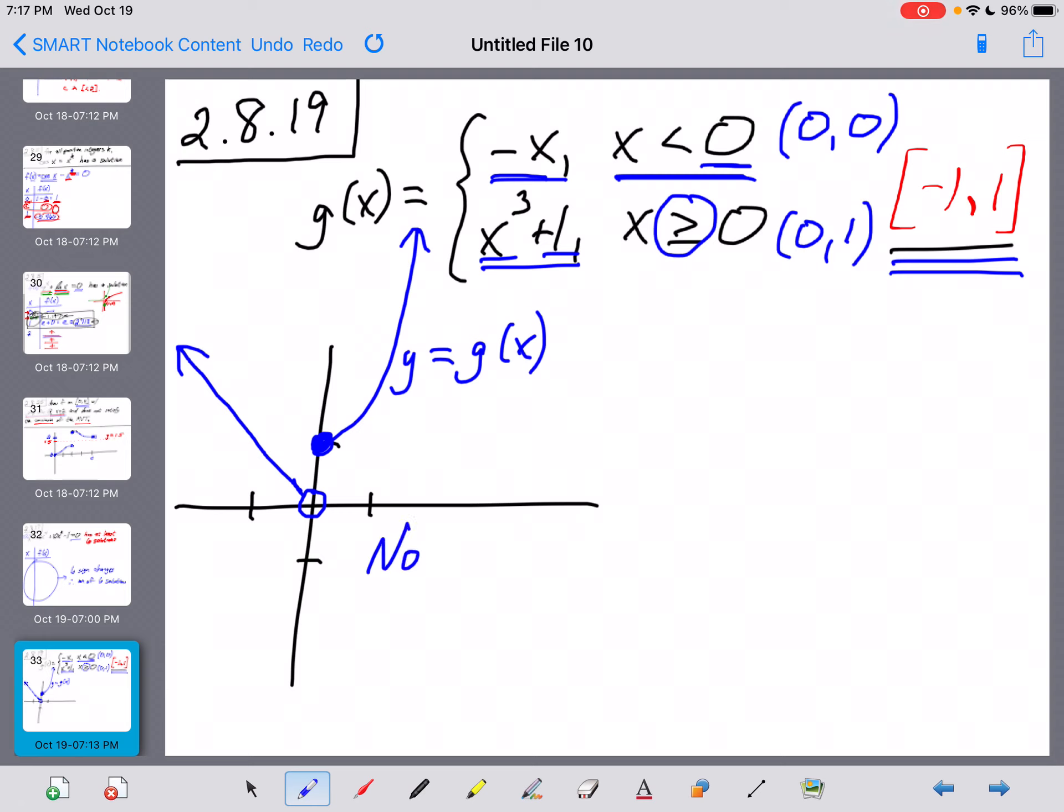So we would have to write this out here, we'd have to say no, the IVT does not apply to g of x, because g of x is not continuous on that entire interval here from negative one to one. Okay, so I think I've answered their first question right here. We've got that.